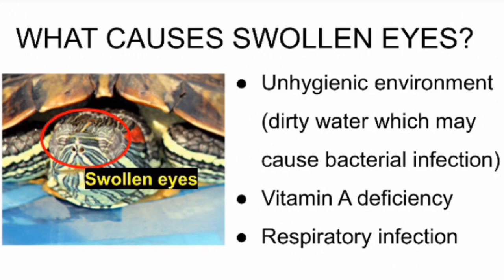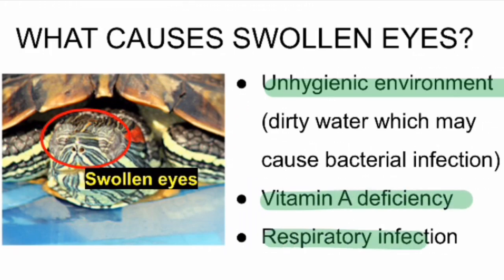Now let's find out what causes swollen eyes in terrapins. One common reason is an unhygienic environment such as dirty water, which is full of bacteria and can cause an infection. Vitamin A deficiency can also be a cause, as well as respiratory infection as mentioned earlier.